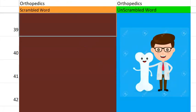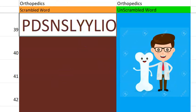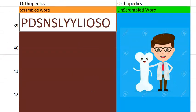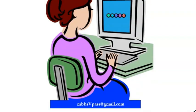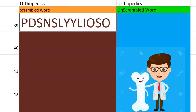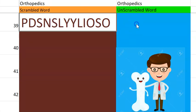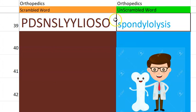Now let's go to the 39th one. Starting with S, something to do with your spine, fracture. Spondylolysis. Basically spine — there is a crack, fracture between two vertebrae. You should understand this one.